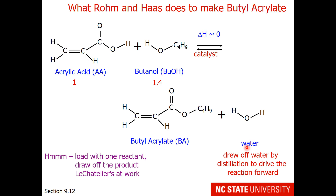We load with one reactant and draw off the product. Left on its own, this reaction makes about 50% product. By pushing with Le Chatelier's, we were able to make 99.999% of our materials into butylacrylate with a continuous feed reactor. Notice, though, that we had to put energy into the system to make this happen. We had to waste by having extra butanol, and we had to put in mechanisms to draw off the water.